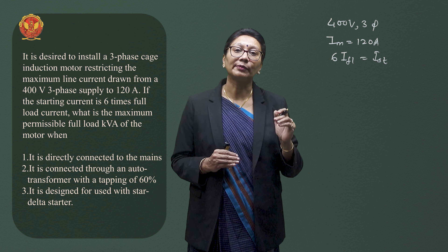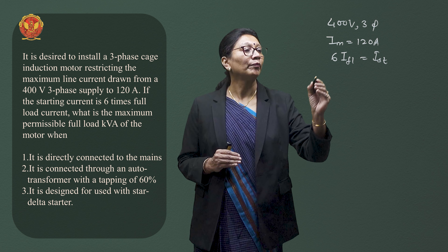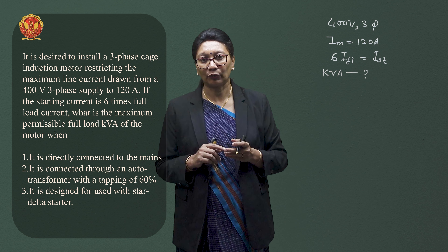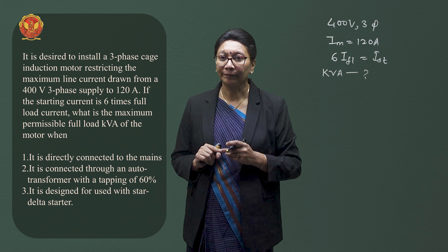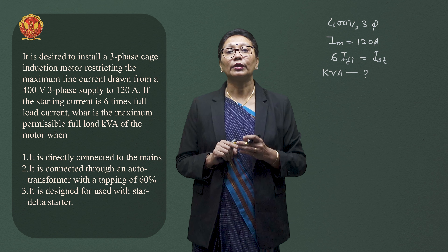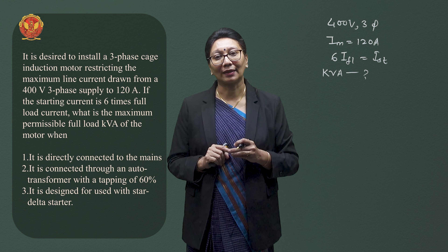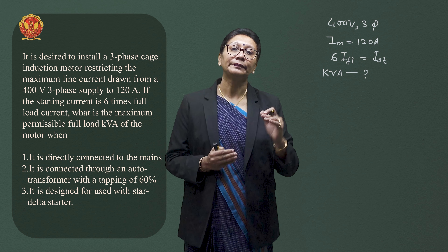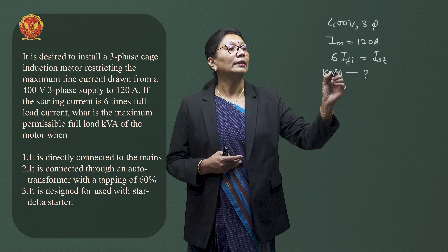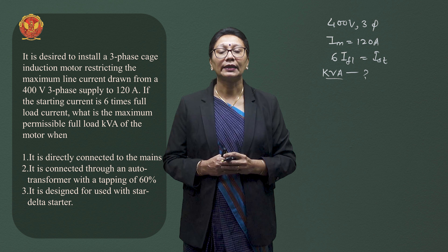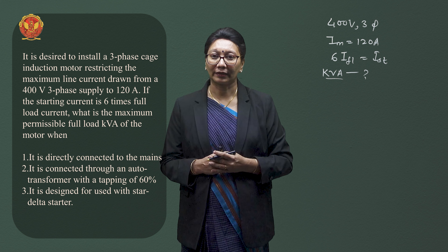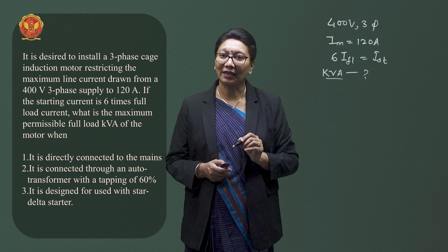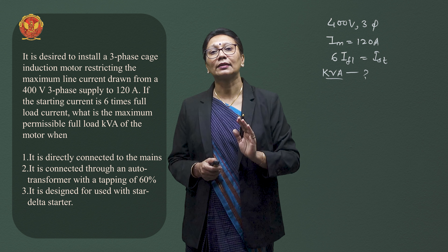We need to find the maximum permissible full load rating of the motor under three conditions: first, when the motor is connected directly to the mains; second, when connected via an auto transformer with 60% tapping; and third, when using a star-delta starter. In all cases, the maximum current must not exceed 120A, and starting current is 6 times full load current.